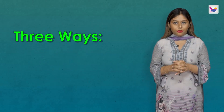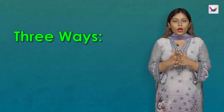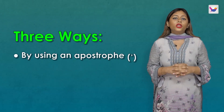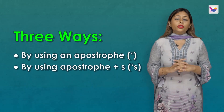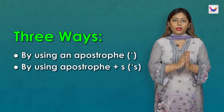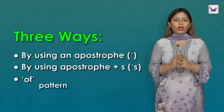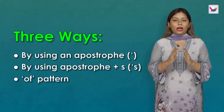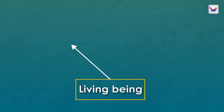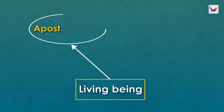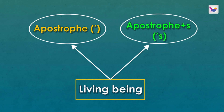We have three ways to form noun possessives: 1. By using an apostrophe. 2. By using apostrophe plus S. 3. The of-pattern. For living beings, we can use an apostrophe S — this is the possessive case in English grammar.